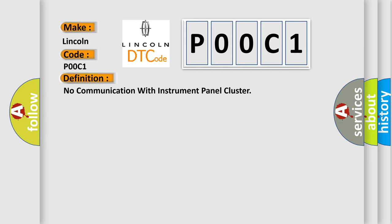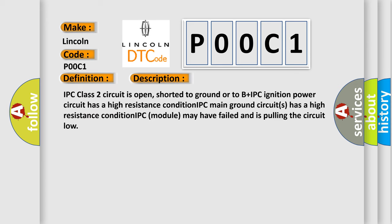And now this is a short description of this DTC code. IPC class 2 circuit is open, shorted to ground or to B plus IPC. Ignition power circuit has a high resistance condition. IPC main ground circuits has a high resistance condition. IPC module may have failed and is pulling the circuit low.